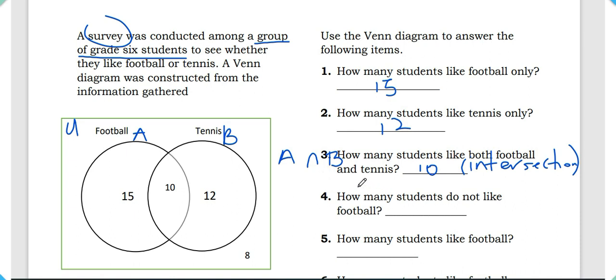Question four: how many students do not like football? The number of students that do not like football includes all students that fall outside of the football subset. We have 12 students in tennis only and 8 students outside both circles, so the number of students that do not like football is 20.